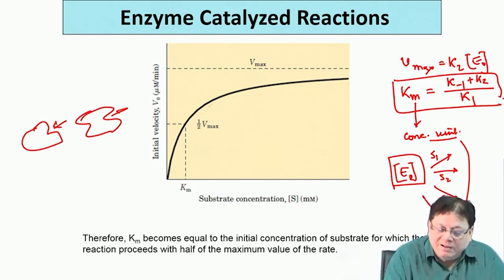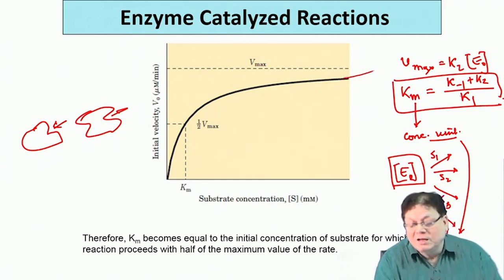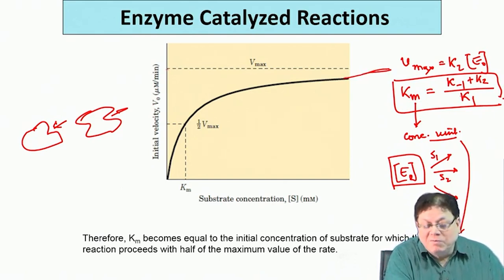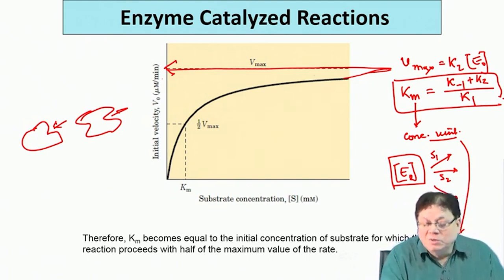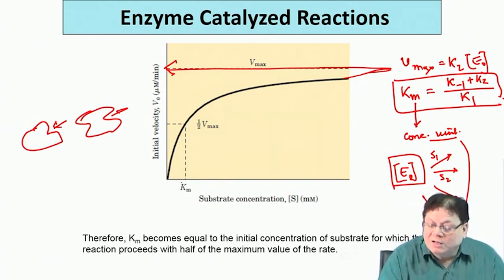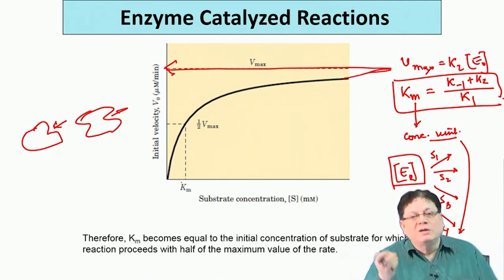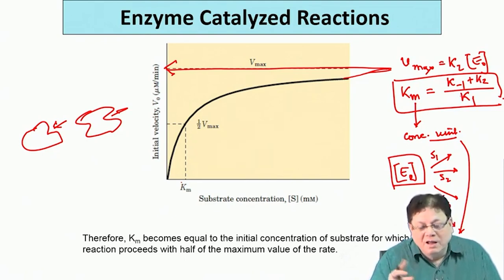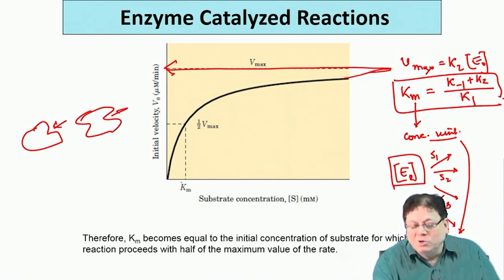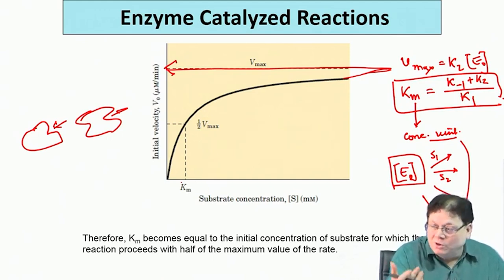The nature of the graph is that it increases and finally slowly comes to a constant value — this is the maximum velocity, Vmax, that you can get with a particular enzyme concentration. At this point the enzyme is saturated with the substrate, similar to a saturated solution where if your water content is fixed, after a certain point sodium chloride will not dissolve further. That is why this is called saturation of the enzyme. Vmax depends on your initial enzyme concentration; if you vary the initial enzyme concentration, the value of Vmax will also change.